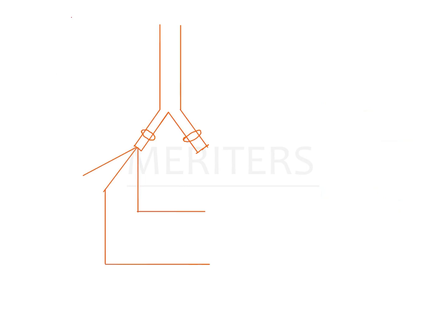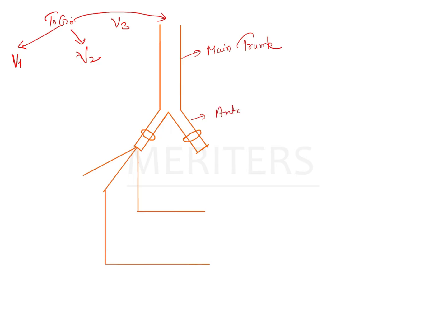So the trigeminal ganglion gives three nerves: the ophthalmic nerve, the maxillary nerve, and the mandibular nerve. From the trigeminal ganglion you get the mandibular nerve. This is the main trunk of the mandibular nerve. This is the anterior division of the mandibular nerve and this is the posterior division of the mandibular nerve.